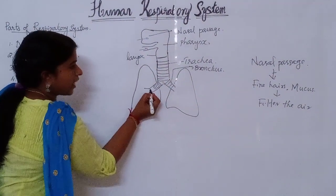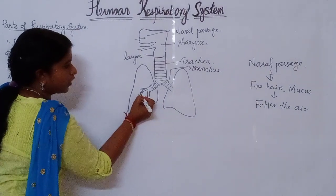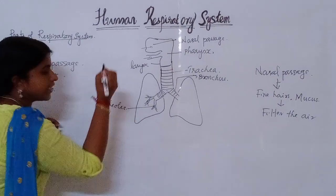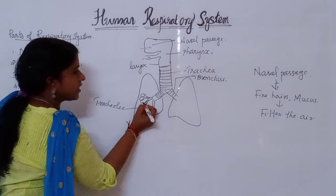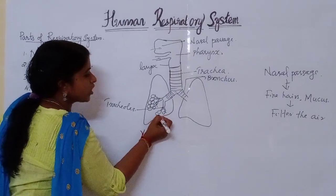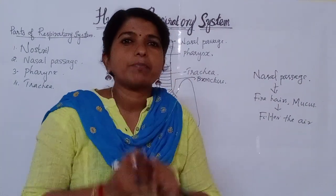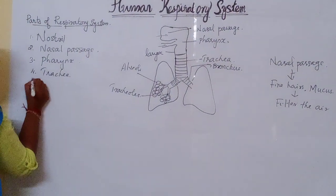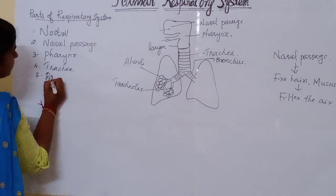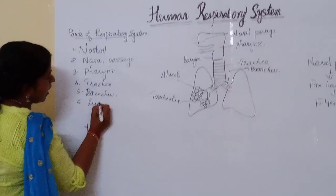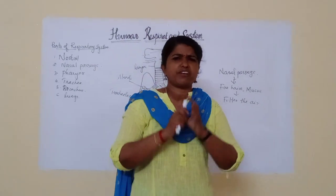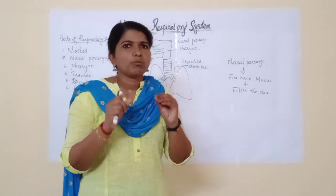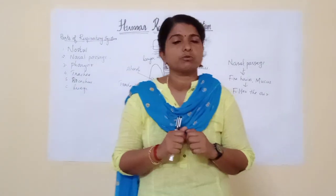Inside the lungs, each bronchus ends in sac-like structures. There are many bunches of these sac-like structures you can see inside the lungs — they are known as alveoli. The alveoli are very thin; their membrane is very thin. They are surrounded by an extensive network of blood capillaries, because the diffusion and exchange of gases takes place through the alveoli.